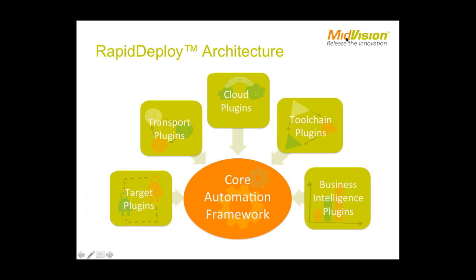We have transport plug-ins, which is the mechanism used to talk to the remote system. From the core framework, when we run a deployment job, we connect remotely to another host. There are currently two mechanisms: SSH secure shell connection, or a remote agent — a small Java remote agent running on the target machine. More recently, we've developed cloud plug-ins to providers such as Amazon Web Services, so we can spin up instances in the cloud and deploy code and configuration to them.